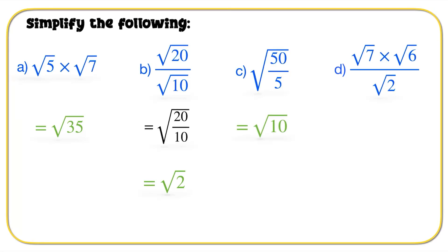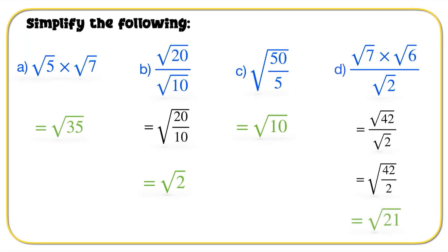Part D: we simplify the numerator to get the square root of 7 times 6, which is 42, divided by the square root of 2. We can write this under one square root as the square root of 42 over 2, which simplifies down to the square root of 21.